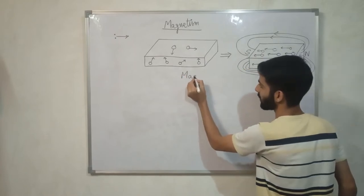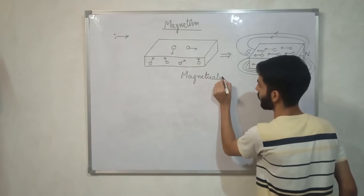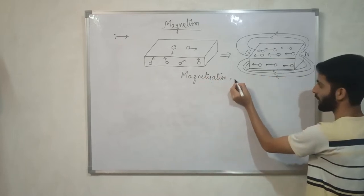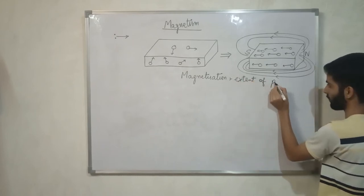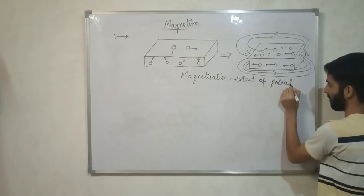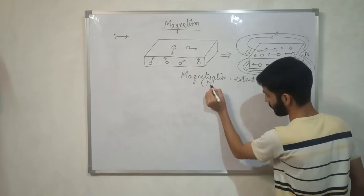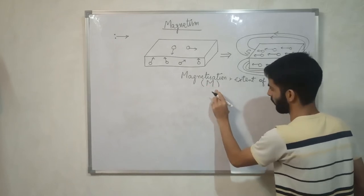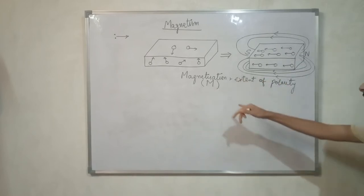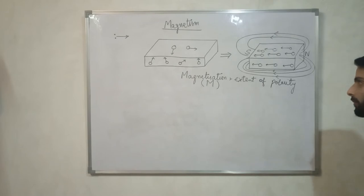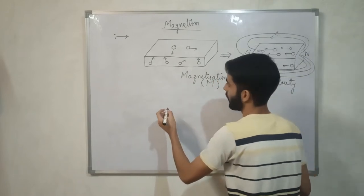The extent of polarity in some substance or block — magnetization — is given by the letter M in magnetism. We have assigned it the letter M to represent magnetization.